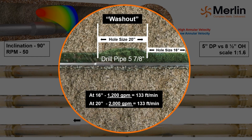A minimum annular velocity of 150 feet per minute, or 45 meters per minute, would be difficult to achieve in larger hole sizes, which is one of the reasons why drilling 16-inch or larger hole sizes in high-angle intervals is challenging. This graphic illustrates that for a 16-inch section that has been enlarged 25 percent to 20 inches, the flow rate required to achieve the same annular velocity will increase from 1,200 gallons per minute to a non-realistic 2,000 gallons per minute.